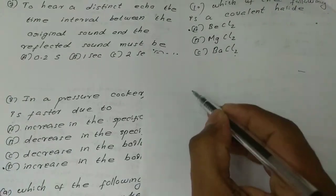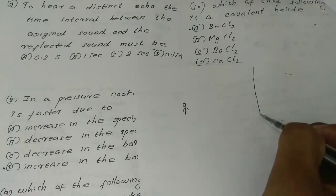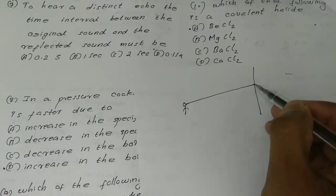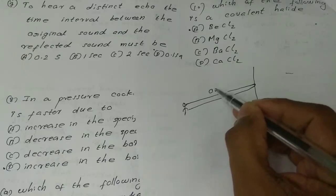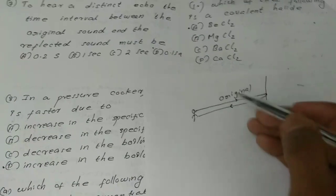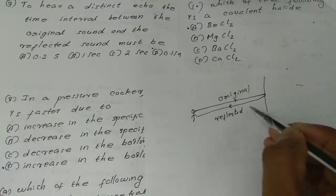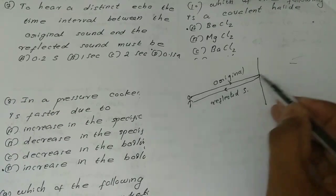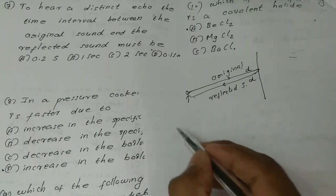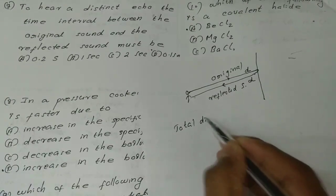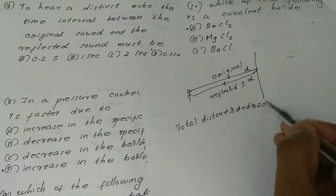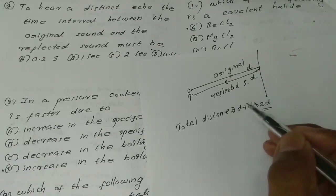Let's see what we have here. If we have a sound source and an obstacle, the sound travels to the obstacle and reflects back. The original sound travels distance d, and the reflected sound travels distance d, so the total distance is 2d.